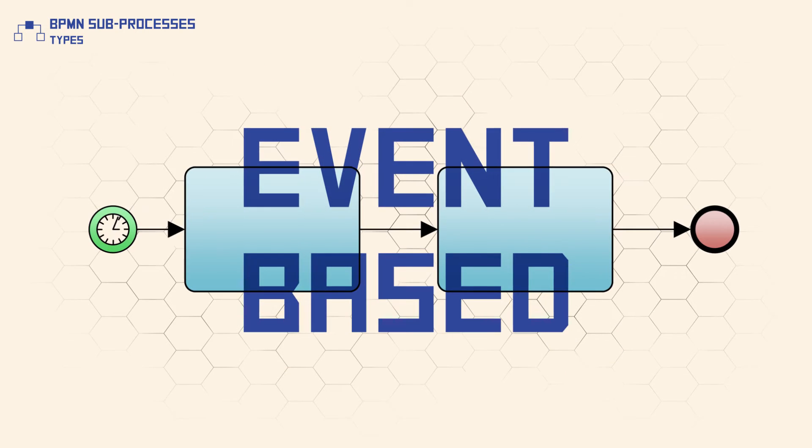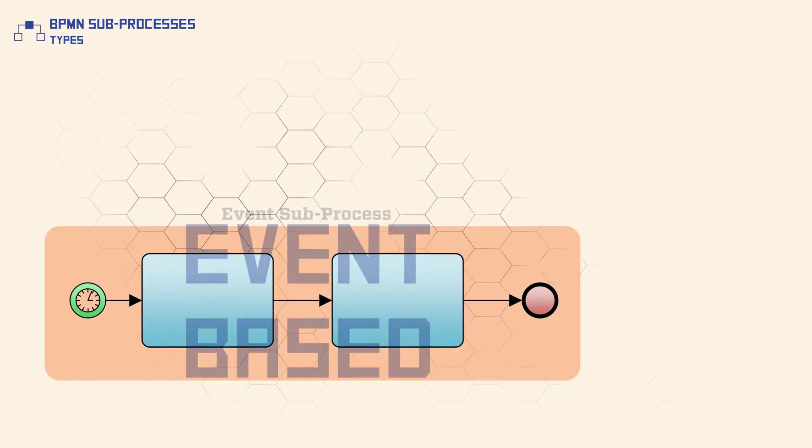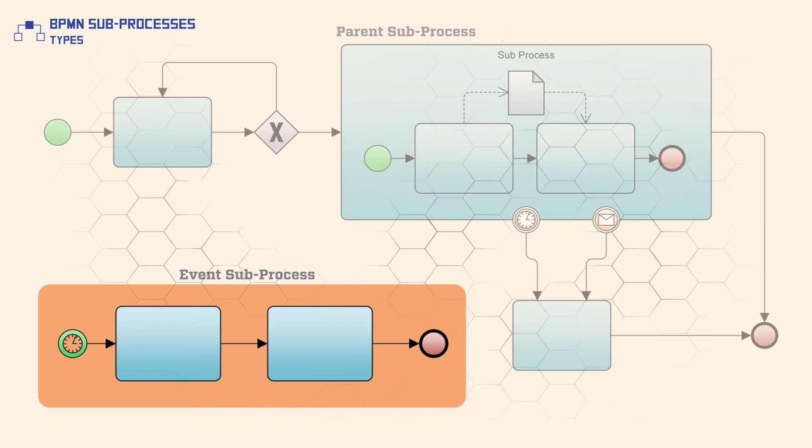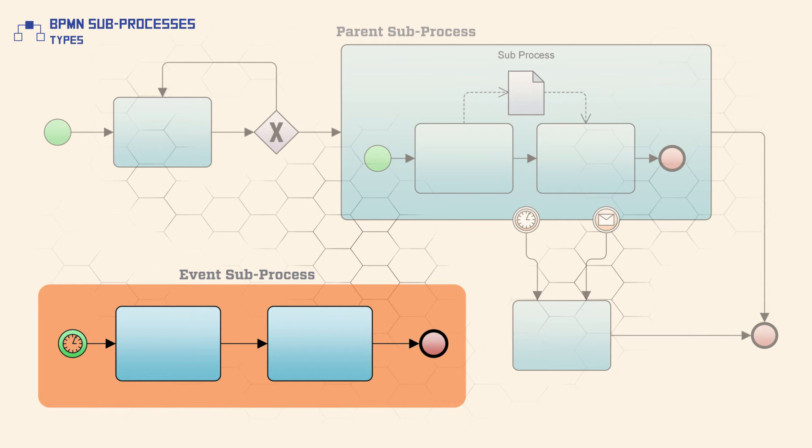An event-based subprocess is used within a process or subprocess. It's not part of the normal flow of its parent process, which means it has no incoming or outgoing sequence flows.